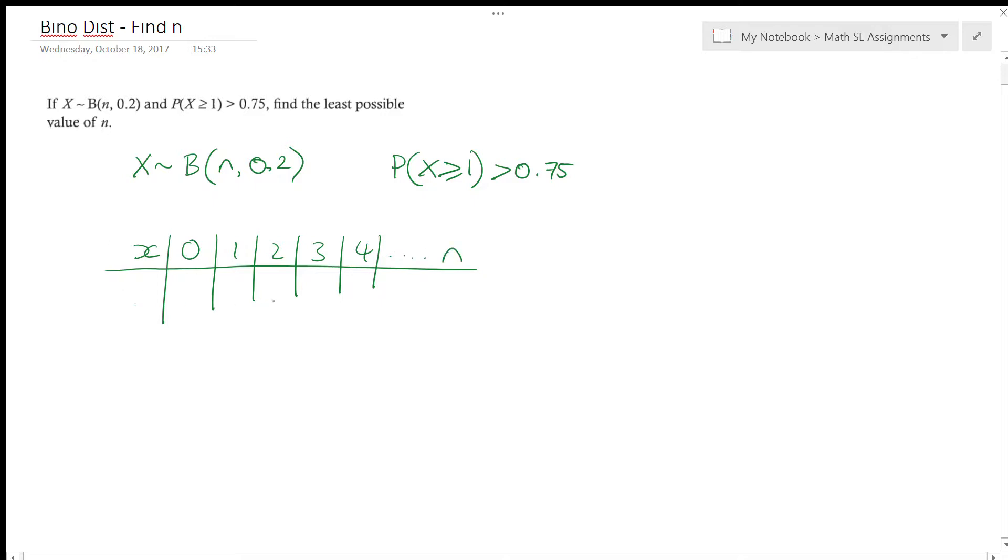Alright, but I don't really know how many times I'm repeating this experiment. And then my probability of success, all I know is that all of these combined needs to be greater than 0.75. So if the probability of getting a 1, a 2, a 3, a 4, all the way up to n, if all together that is greater than 0.75,